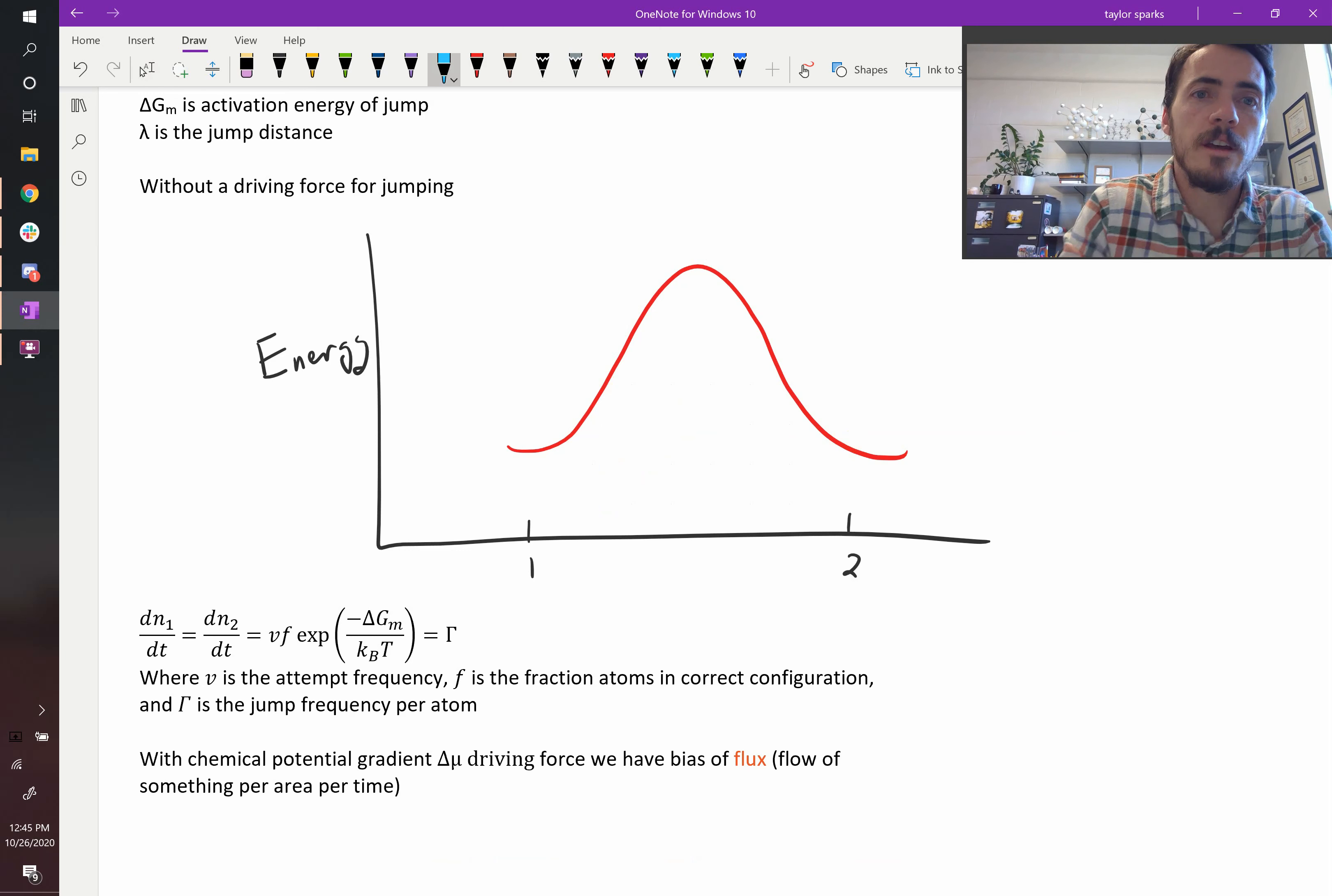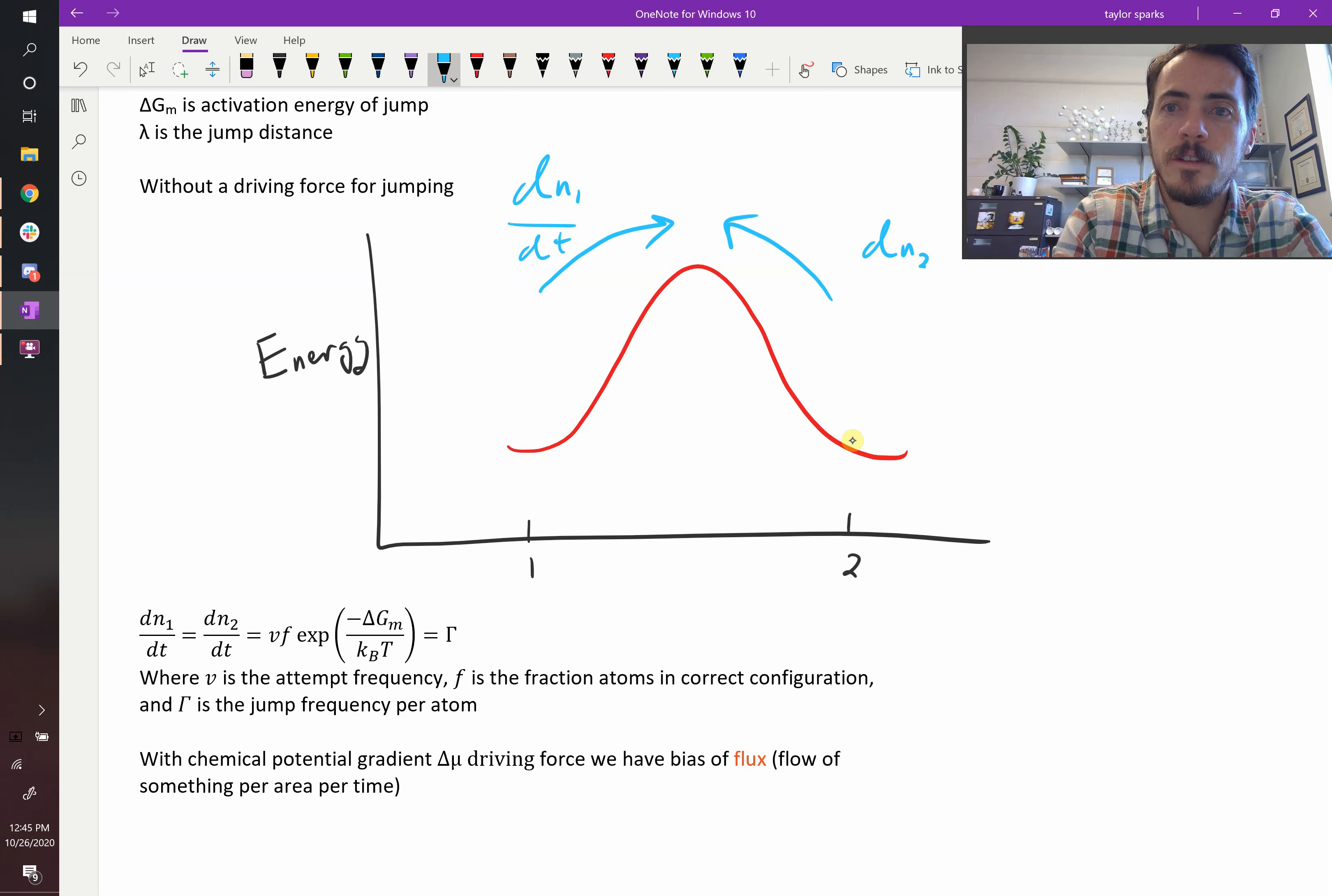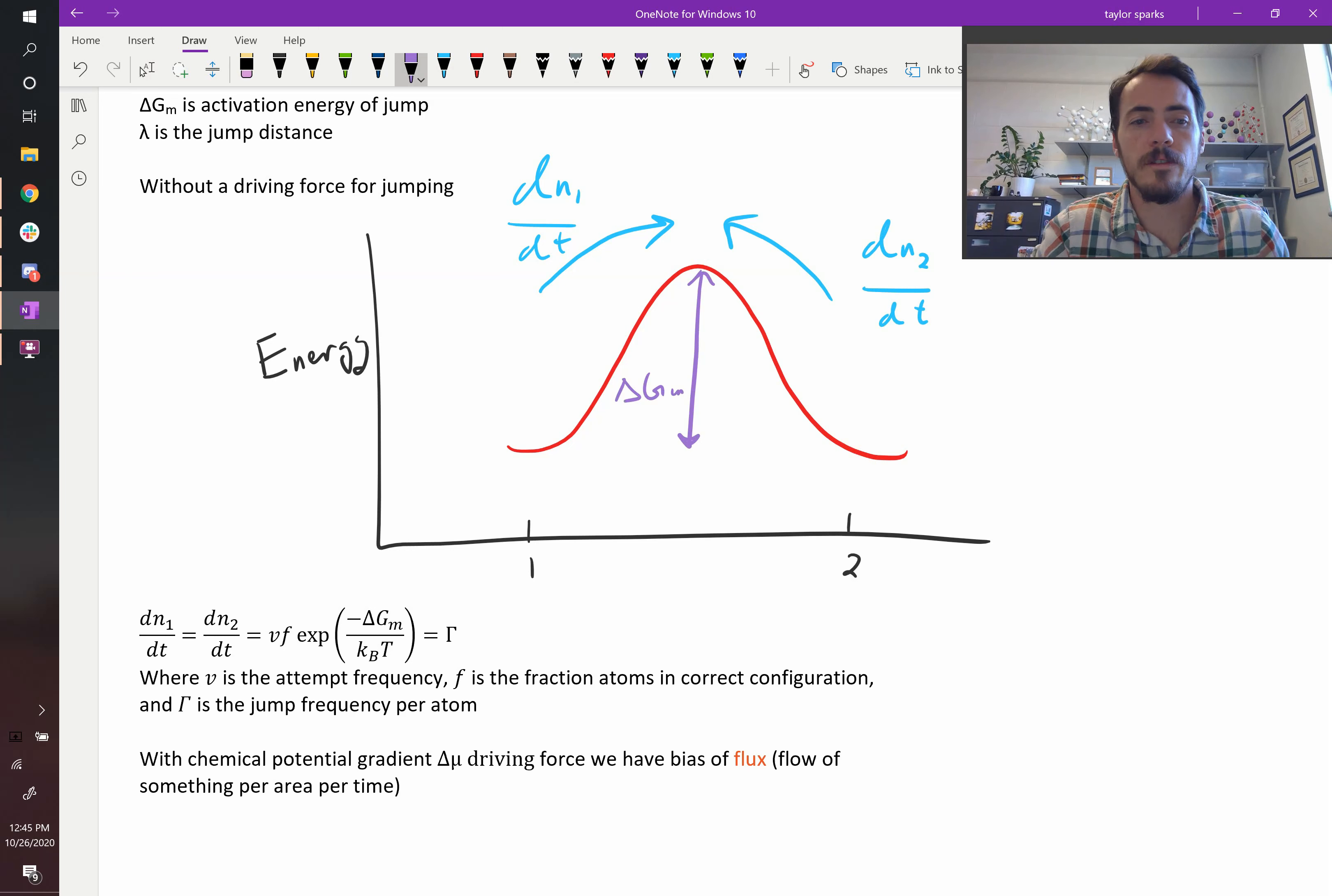Because of this, we can actually calculate the flux of atoms moving from position 1 or moving to position 2. Moving from position 1 to 2, that would be dN1/dt, the change in the concentration of atoms at position 1 with time. Going the other way would be dN2/dt, the change in the concentration of atoms at position 2 with respect to time. And again, the activation energy, delta Gm, would be right there. That would be our activation energy.